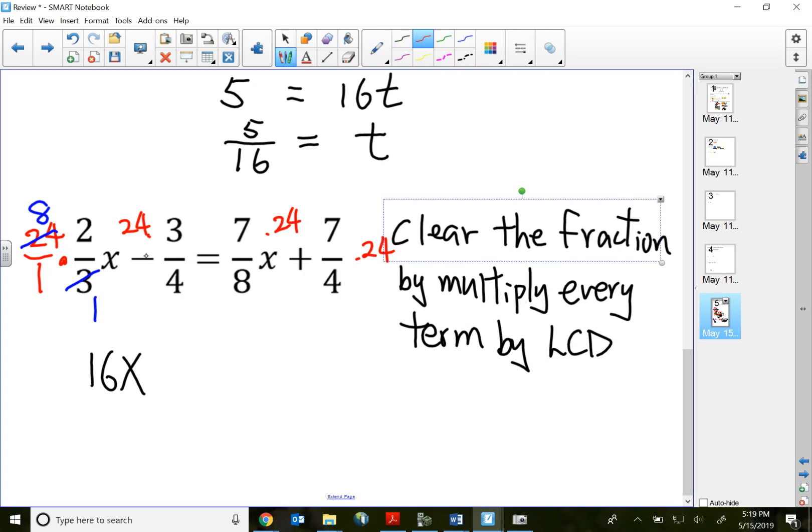Second term times by 24 means 24 over 1. Top 24, bottom 4, reducing to 1 and 6. So that will be negative 6 times 3, negative 18.